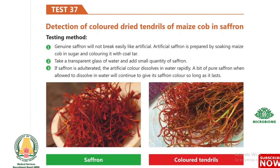Test 37: Detection of colored tendrils of maize cob in saffron. Genuine saffron will not break easily like the artificial variety. Artificial saffron is prepared by soaking maize tendrils in sugar and coloring with coal tar. Take a transparent glass of water and add a small quantity of saffron. If adulterated, the artificial color dissolves in water rapidly. A piece of pure saffron, when allowed to dissolve in water, will continue to give saffron color so long as it lasts.